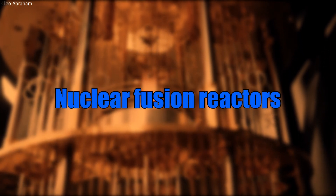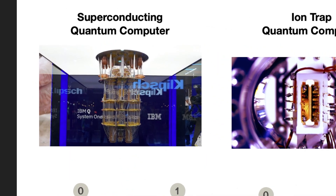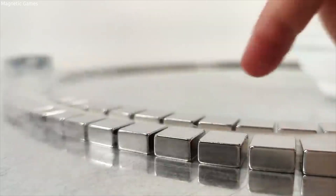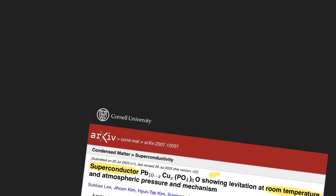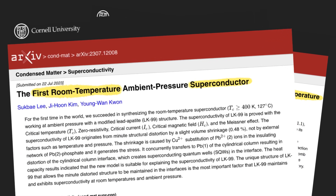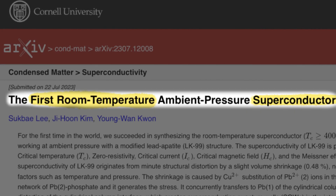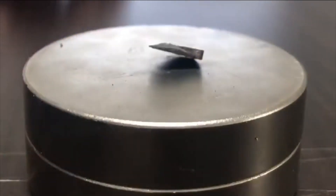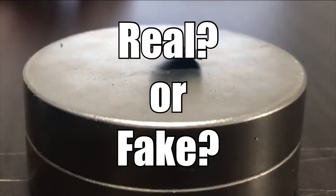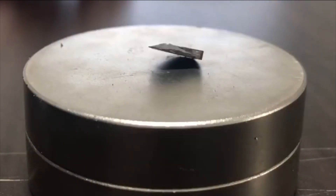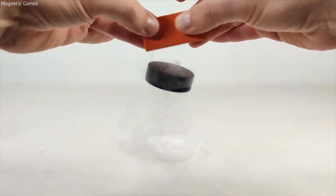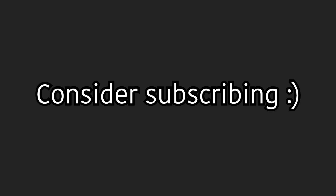Or think of quantum computers — they also use superconductors but could be far more efficient and faster if they don't need to be cooled down to such low temperatures. All in all, a room temperature superconductor would change the world in so many different ways. The future will show us if LK99 is as good as it sounds or if it is a fake discovery. Nevertheless, superconductors are awesome and room temperature superconductors even more. Thanks for watching.